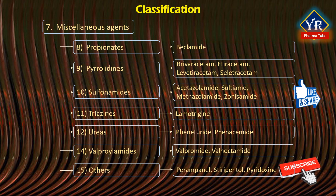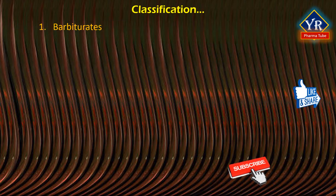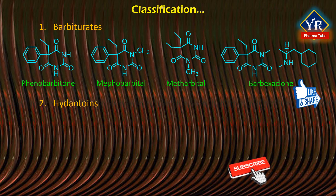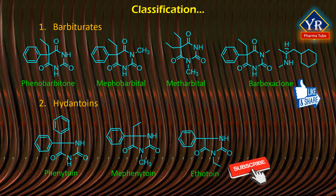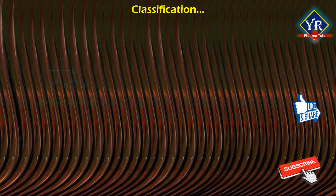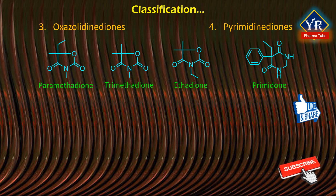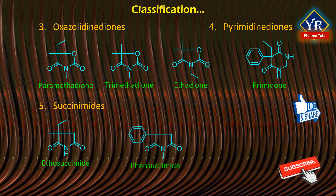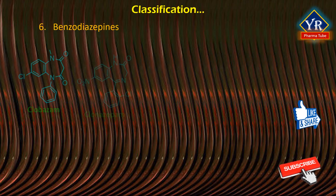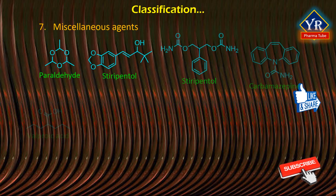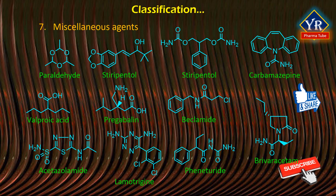The details of each type of these drugs will be discussed in later videos. Here are the structures of barbiturates: phenobarbitone, methylphenobarbital, metharbital, and barbexaclone. Hydantoins include phenytoin, mephenytoin, ethotoin, and fosphenytoin. Paramethadione, trimethadione, and ethadione are oxazolidinediones, and primidone is a pyrimidinedione. Succinimides are ethosuximide, fensuximide, and mesuximide. The structures of all the benzodiazepines and important miscellaneous agents are also given here. You can pause the video to note down the structures.